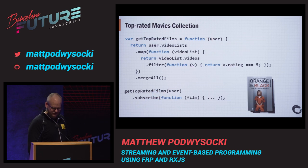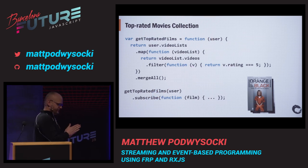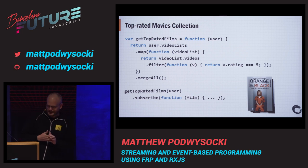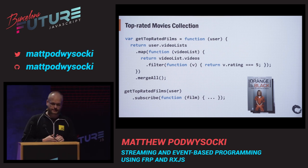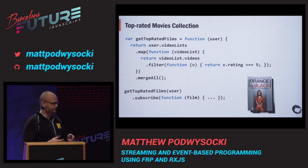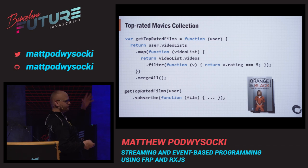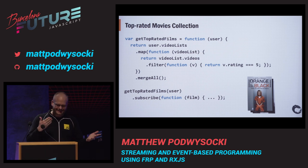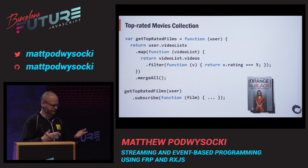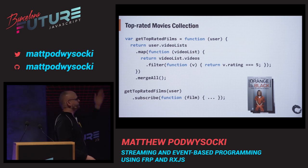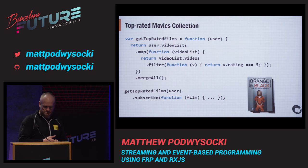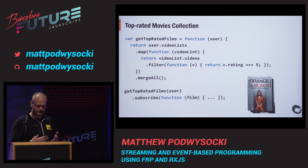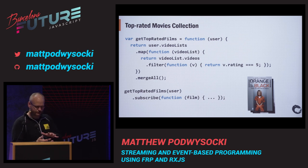Now we can take something like the Netflix API — Netflix is a heavy user of Rx — and start to query the top-rated movie collections. If you look at this code and you're familiar with programming arrays in JavaScript, this code should look fairly similar. You're dealing with map and filter. Instead of forEach you're calling subscribe. What we're doing at the end is merging all into a single list — going through video lists, getting videos where the rating is five, and flattening into a single list.